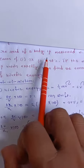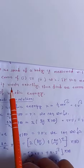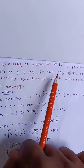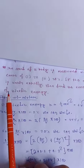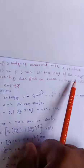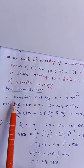The speed of a body is measured with a positive error of 2% (and in the second case 20%). If the mass of the body is known exactly, then find the error in the calculation of the kinetic energy.